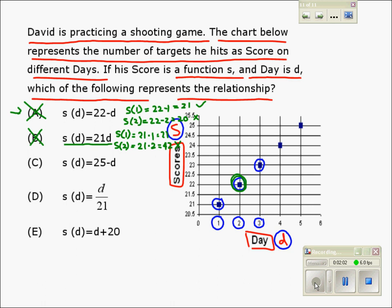Let's quickly check the remaining options. Option C says S equals 25 minus D. Now for day 1, we will have S equals 25 minus 1, which is 24, and this is not correct, because we need 21 as indicated in the chart. So we reject option C.